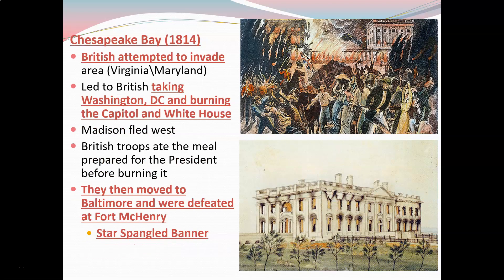In 1814, the British attempted to invade the area of Maryland and Virginia. It led to the British taking Washington, D.C. and burning the Capitol and the White House. James Madison was forced to flee so fast that he had to leave his meal — and then the British ate his meal before burning the place. Pretty bad: they burned the man's house and then took his meal.